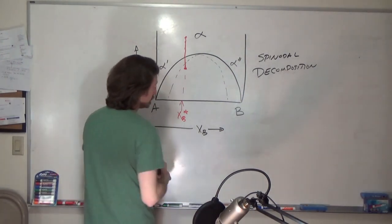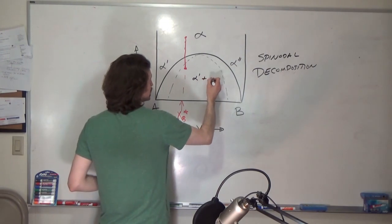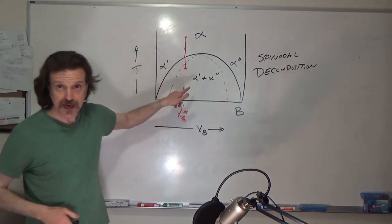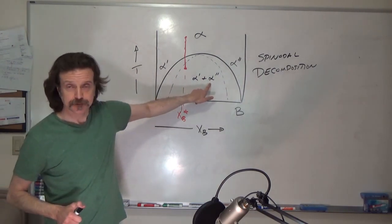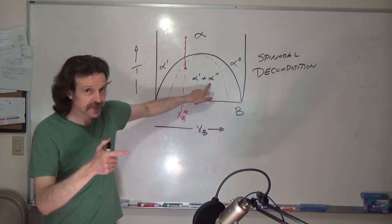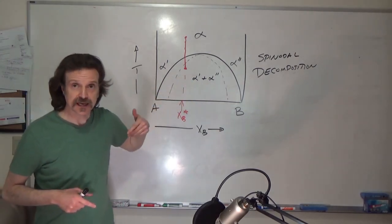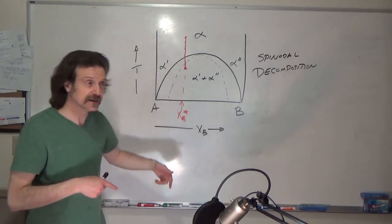This two-phase region is defined as alpha prime plus alpha double prime. Now you notice we kept the same Greek letter, and the reason for that is that these two have the same crystal structure.